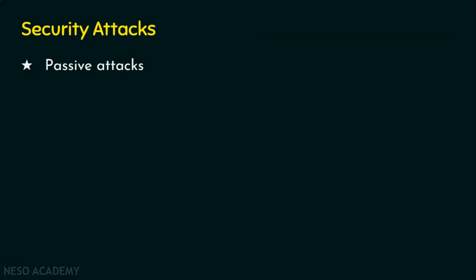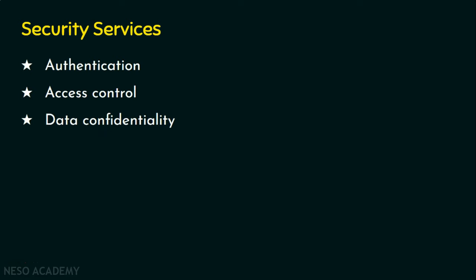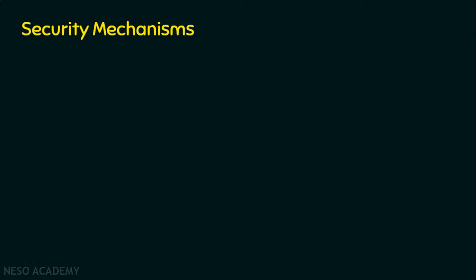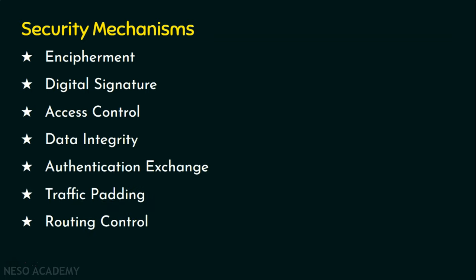Attacks are of two types: passive attack and active attack. We will see about attacks in the next lecture with examples. Coming to security services, there are many services expected from a secure system: the authentication service, access control, data confidentiality, data integrity, and non-repudiation. Don't worry about these new terms — we will cover all terminologies in this lecture series. Security mechanisms include encipherment, digital signatures, access control, data integrity, authentication exchange, traffic padding, routing control, and notarization.